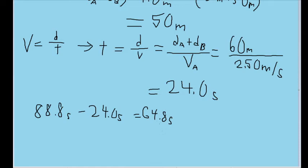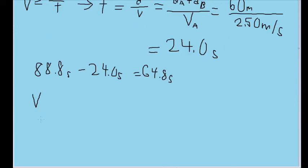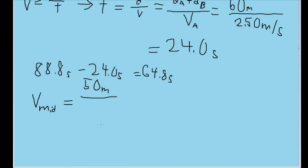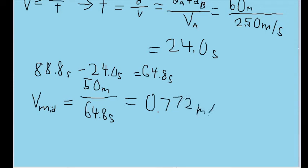Now we can find the average speed of the water underneath the hill. The speed V_mid for the middle section equals the distance it traveled — 50 meters — divided by the time it took to travel through that section — 64.8 seconds. Plugging this in, we get an answer of about 0.772 meters per second as the average speed of the water through the middle segment. Now we need the average radius, so it is time to apply the continuity equation.